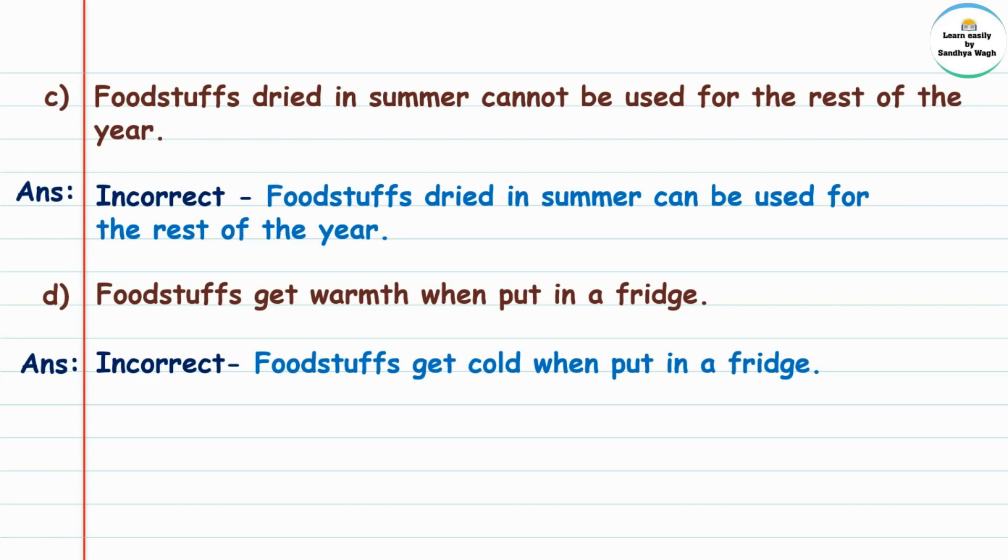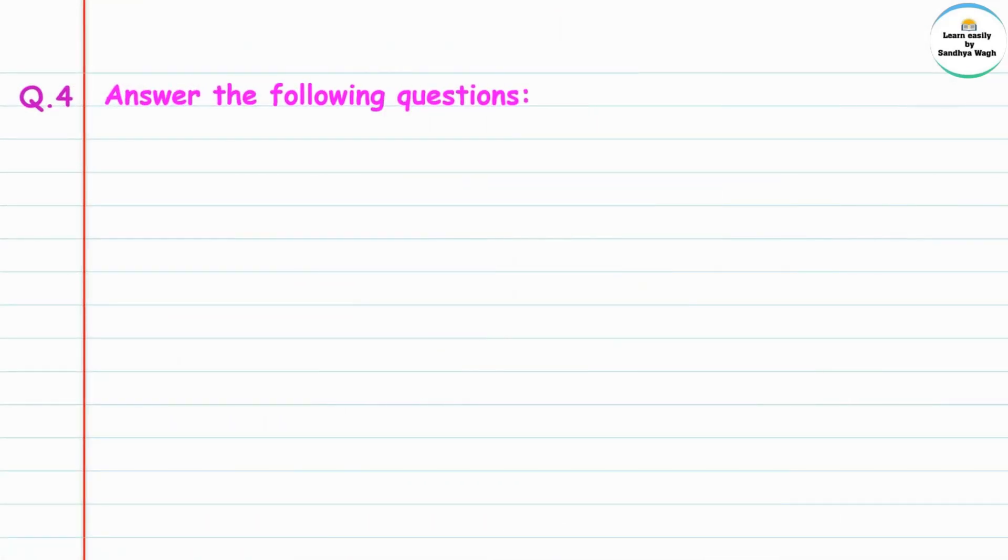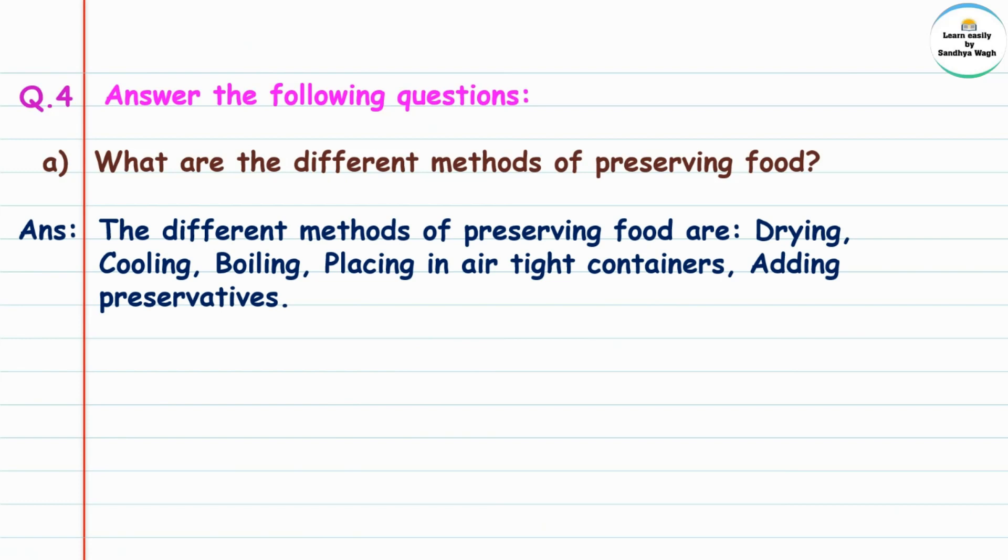Question 4: Answer the following questions. First question: What are the different methods of preserving food? Answer: The different methods of preserving food are drying, cooling, boiling, placing in airtight containers, and adding preservatives.